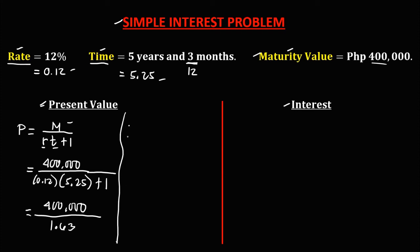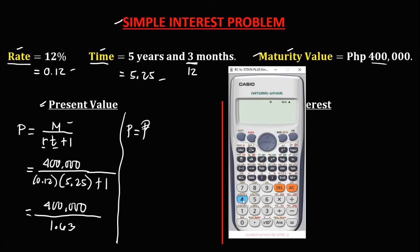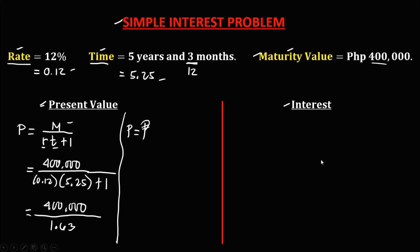So to solve for the present value, 400,000 divided by 1.63 equals 245,398.77. So this is the present value.